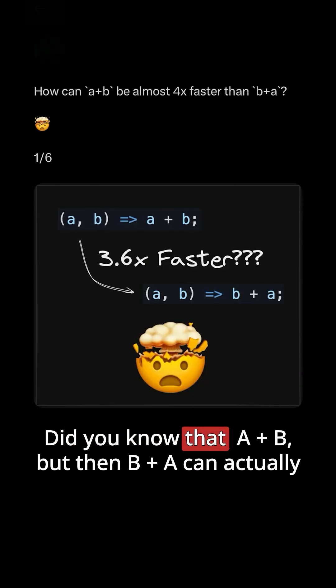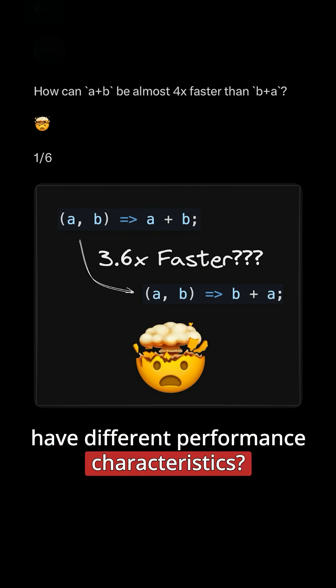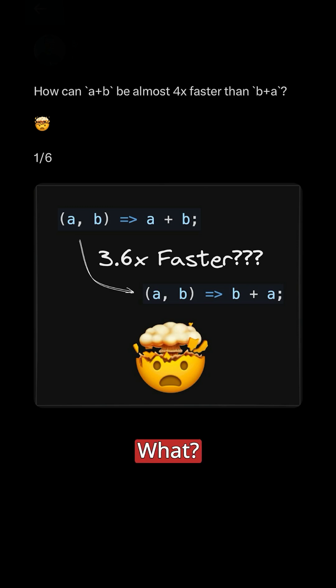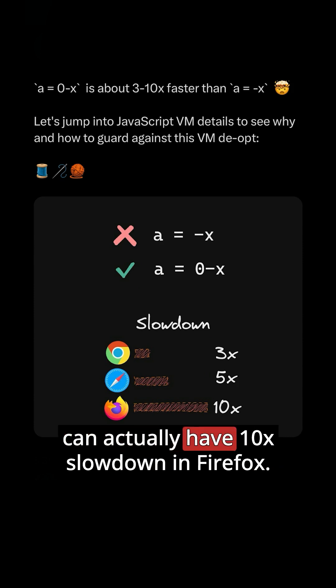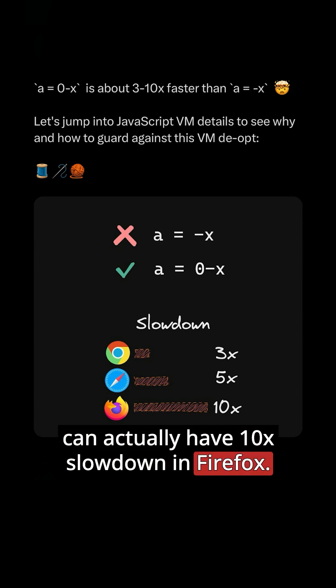Did you know that A plus B, but then B plus A can actually have different performance characteristics? What? That makes no sense. Why would that be? Another one is that negative X and zero minus X can actually have a 10x slowdown in Firefox.